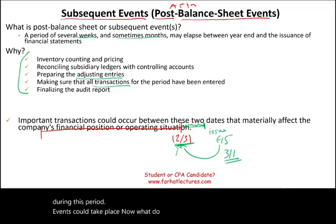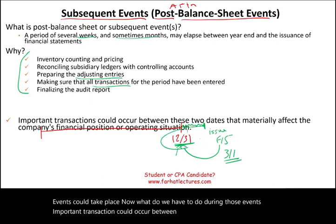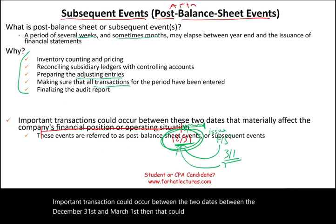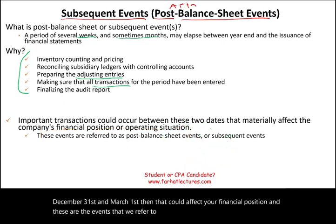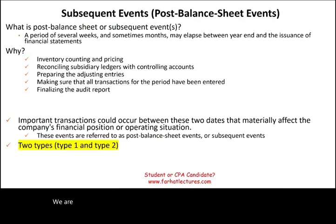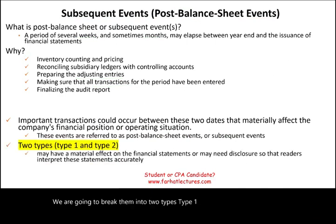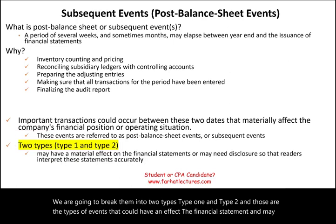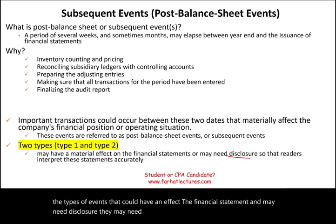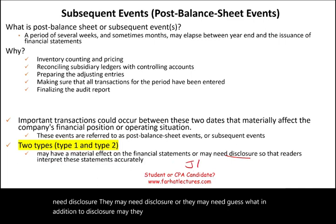During this period, events could take place. Important transactions could occur between the two dates — between December 31st and March 1st — that could affect your financial position. These are the events we refer to as subsequent or post balance sheet events. We are going to break them into two types: Type 1 and Type 2. Those are the types of events that could have an effect on the financial statements and may need disclosure, or in addition to disclosure, may need journal entries.